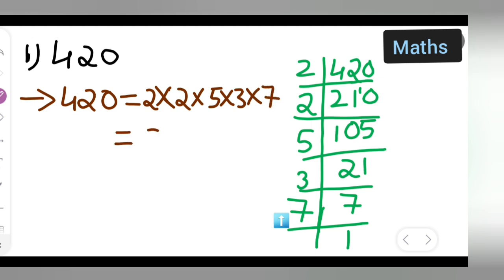How are we going to write this? 2 comes 2 times, so 2 squared. 5 comes 1 time, so 5 raised to the power of 1. And 3 raised to the power of 1, and 7 raised to the power of 1. So this will be your answer in exponential form.